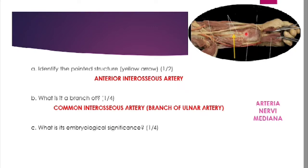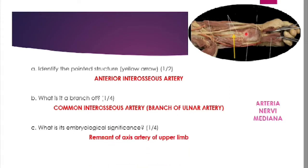The third part of the question asks about the embryological significance of the anterior interosseous artery. You have to remember that the anterior interosseous artery is considered to be a remnant of the axis artery of the upper limb.